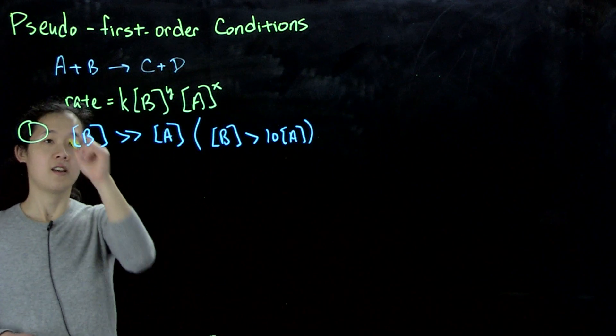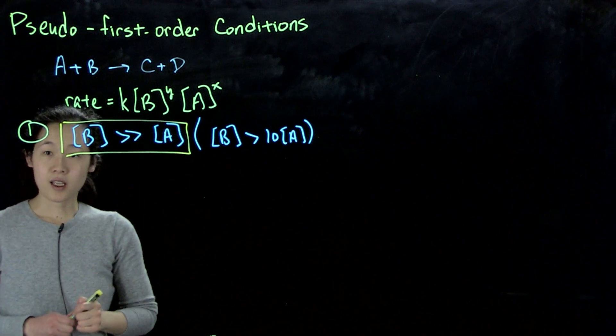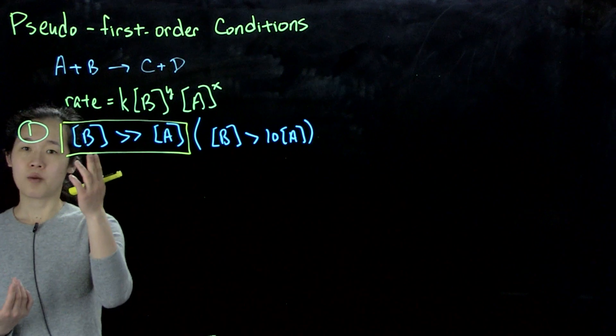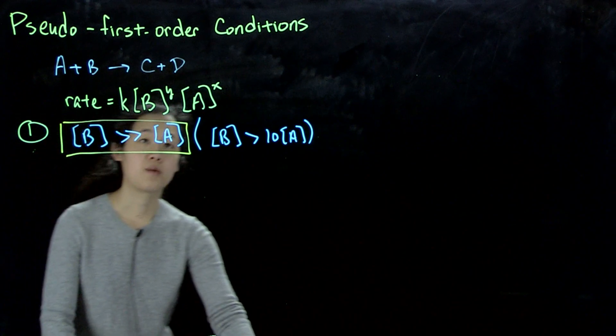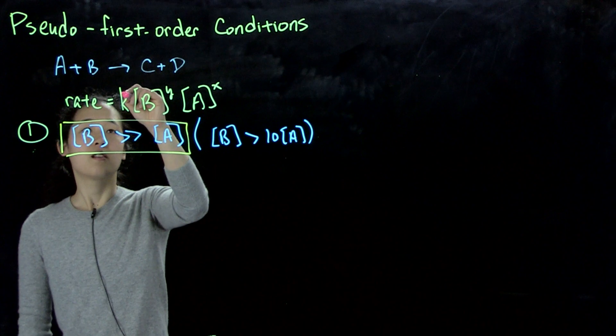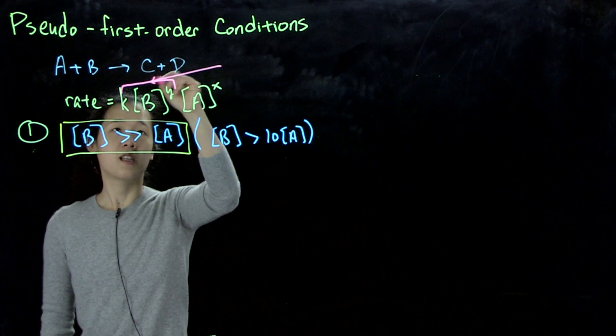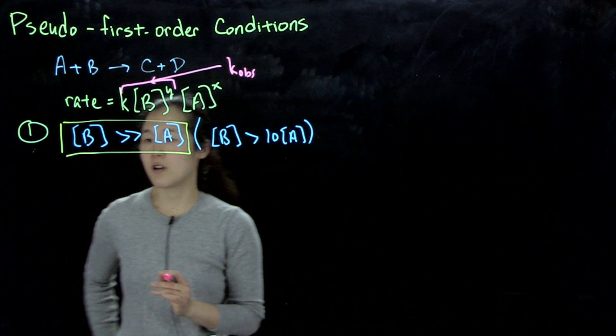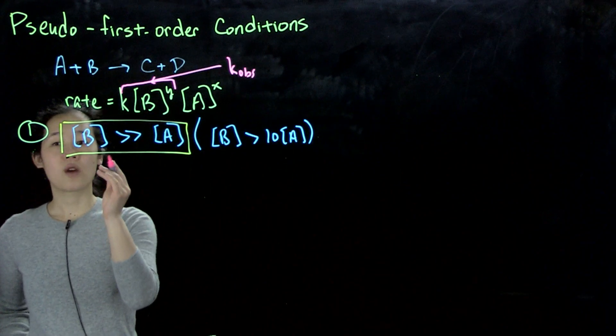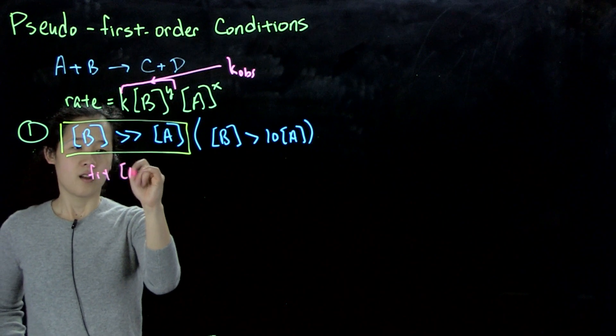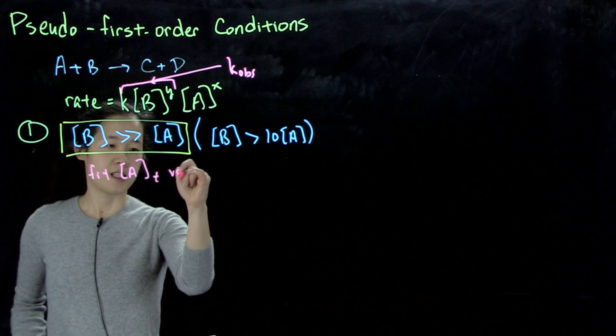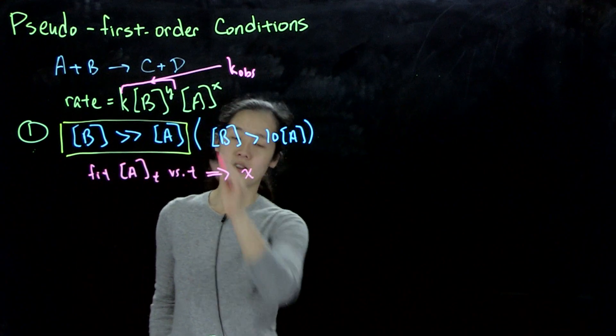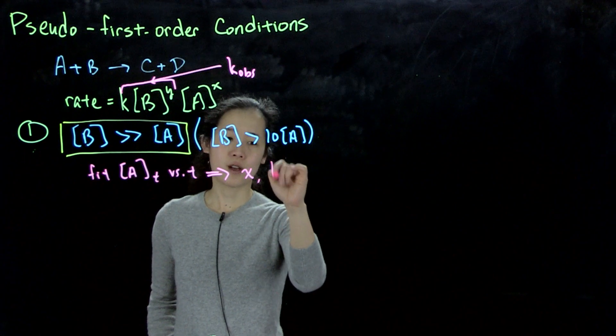So again, this was the key part. And by doing this, because B is so high in concentration throughout the reaction, the concentration of B will be approximately constant, which means that we can then turn this expression, k times B to the y, into k_ob. So by doing that, we then were able to fit A_T versus T, and then this gives us the exponent of A, so the order of A. And we also got k_ob.